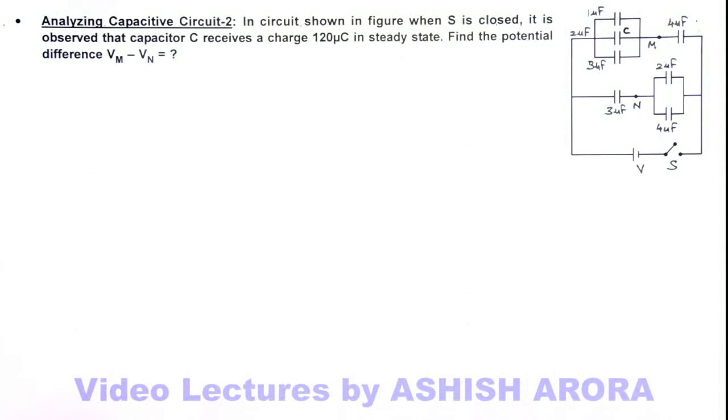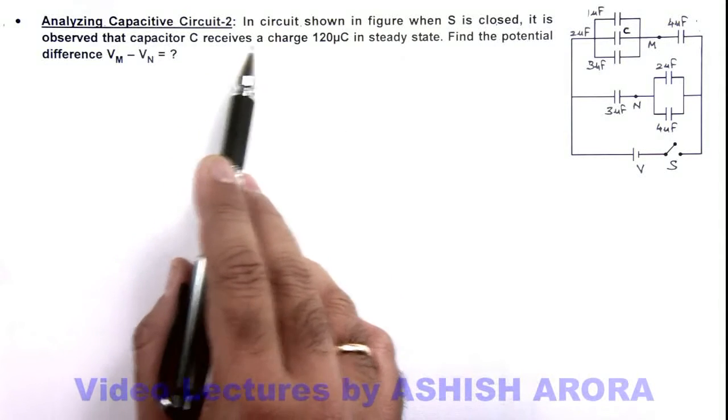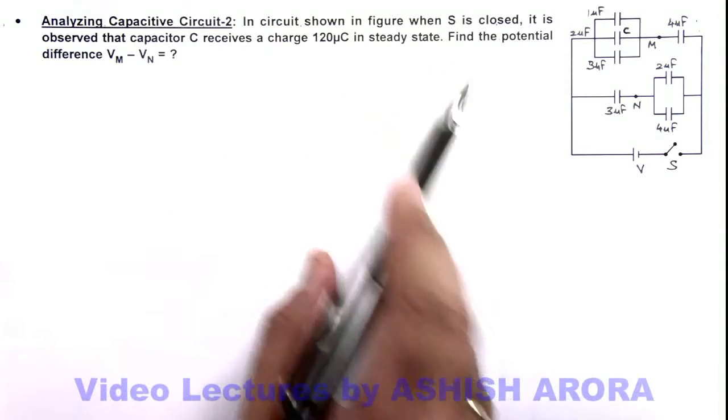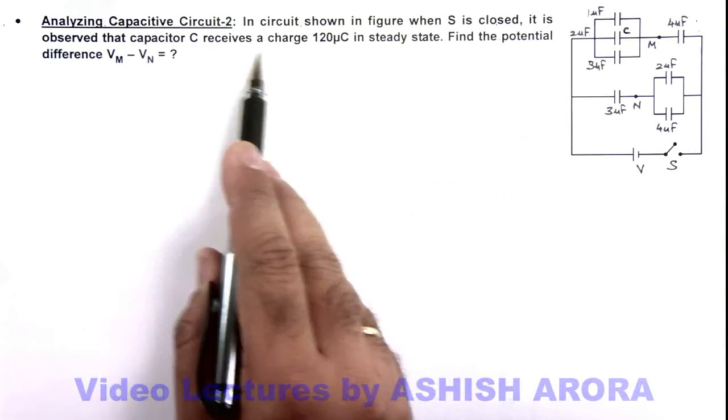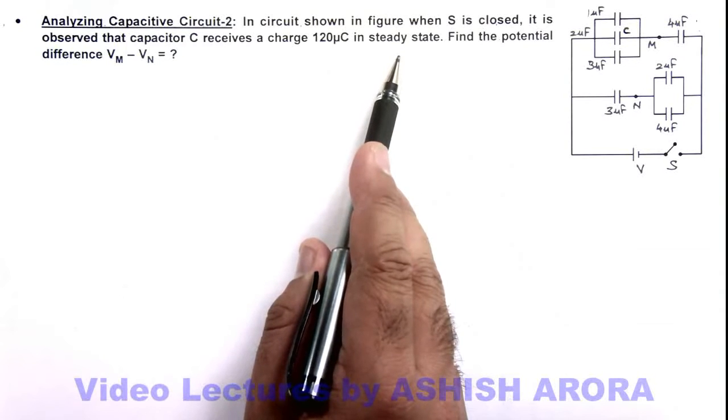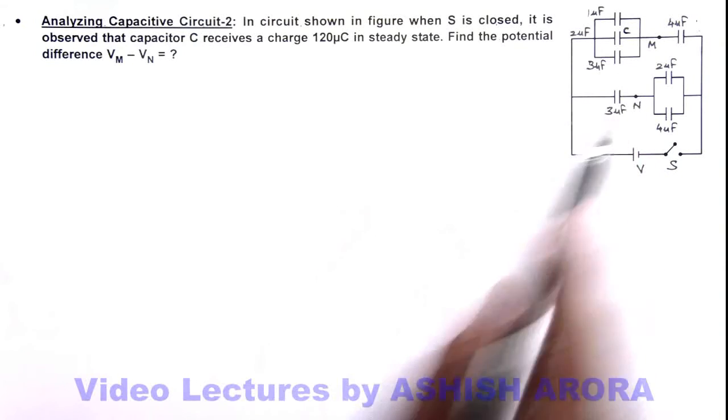In this illustration we'll analyze another capacitive circuit. It is saying that in the circuit shown in figure when S is closed, it is observed that capacitor C receives a charge 120 microcoulomb in steady state. Here we are required to find the potential difference Vm minus Vn, two points mentioned in the circuit.